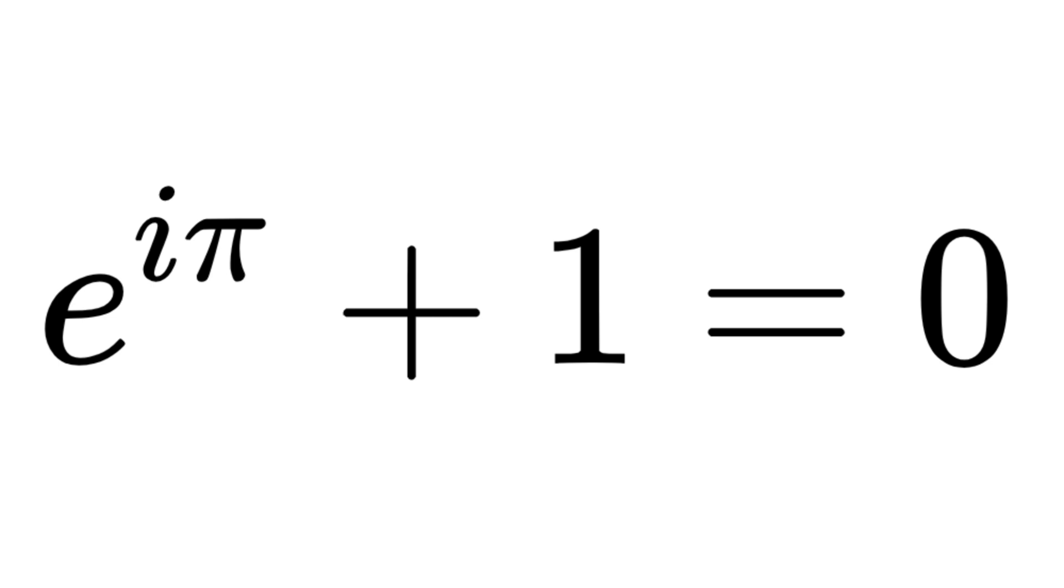Euler's identity, e to the power of i pi plus 1 equals 0, is widely regarded as one of the most elegant and profound equations in mathematics.